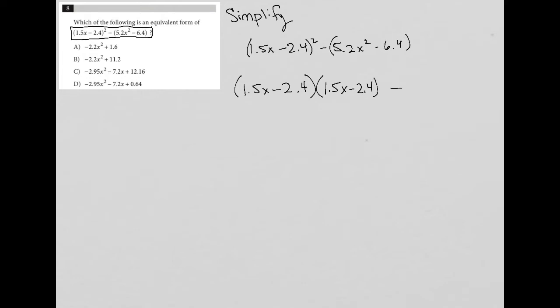And then all of that minus this 5.2x squared. And in fact, I don't need parentheses on this portion of it. Right, I can just distribute the negative sign across. So minus 5.2x squared plus 6.4.